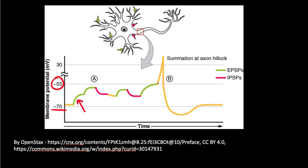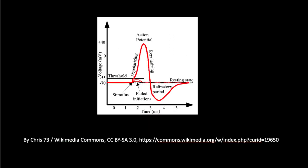When there is an excitatory postsynaptic potential, the resting membrane potential moves towards the threshold potential of minus 55 millivolts. The threshold potential is so called because when the voltage inside the neuron reaches this point, there is an action potential. When EPSPs reach the threshold of minus 55 millivolts, you have an action potential.